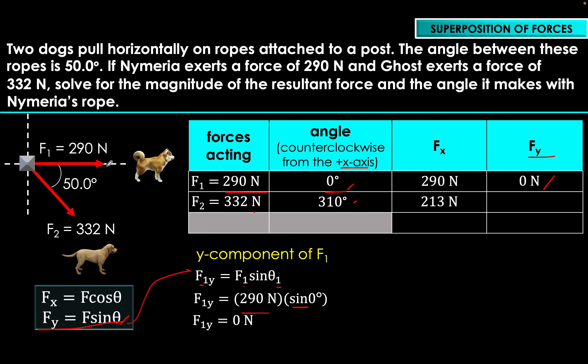For Ry, we add 0 and negative 254, giving us negative 254 Newtons. This means that overall, as a result of these two forces, their combined effect along the y-axis is a 254 Newton force directed downward — hence the negative sign.